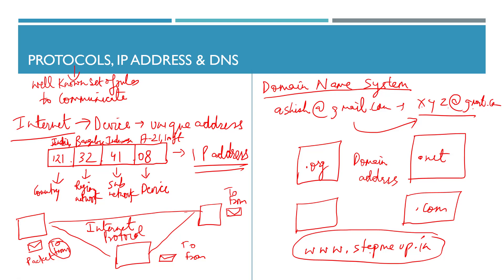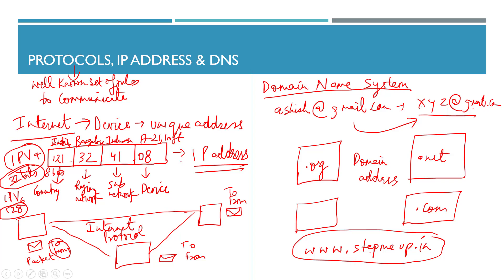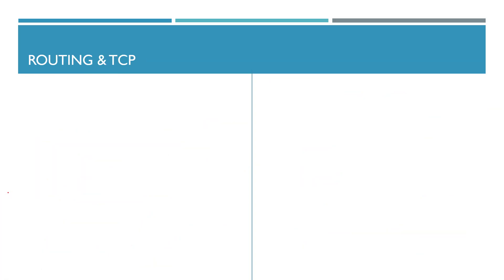Today we are in the IPv4 generation, where each address is 32 bits long — made up of four groups of 8 bits. We are also moving toward IPv6, which uses 128-bit addresses to accommodate the growing number of devices on the internet.